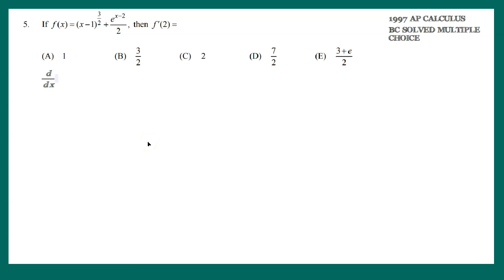So let's differentiate this whole thing. It's going to be the derivative of, let's do it in brackets here, x minus 1 raised to the 3 halves plus this. You can separate that 2 on the bottom into 1 half out front, so it becomes 1 half e raised to the x minus 2.